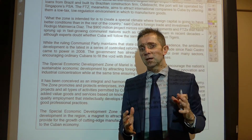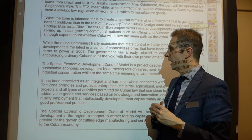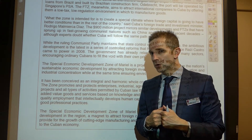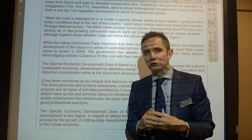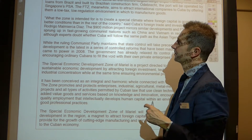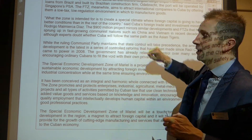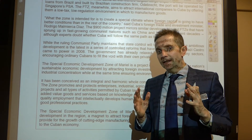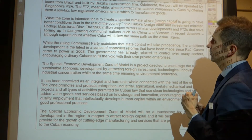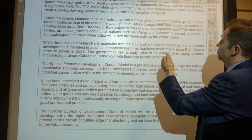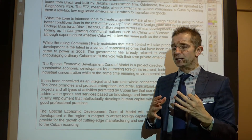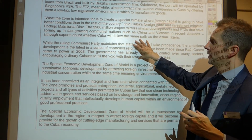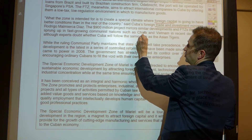From our previous video we were thinking about the free trade zone, and the remaining paragraphs go into that in a little bit more detail. They talk about the benefits the free trade zone will bring, and a little about international trade, which is mentioned also in the first two paragraphs. So what is the zone intended for? To create a climate for foreign capital. So we talked about foreign direct investment, sucking in foreign capital — it's going to have better conditions than the rest of the economy, said Cuba's trade and investment minister. The project mirrors similar developments that have sprung up in fast-growing communist nations such as China and Vietnam.